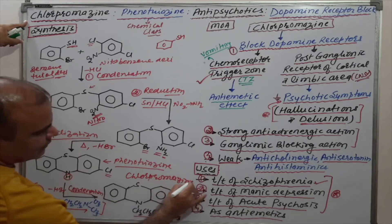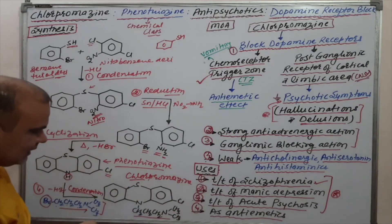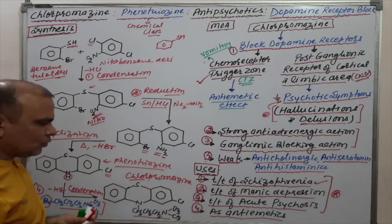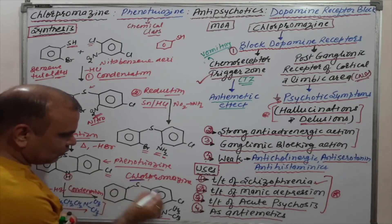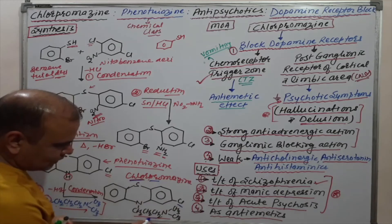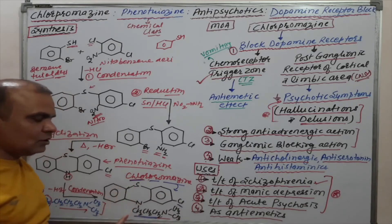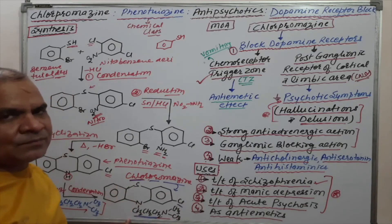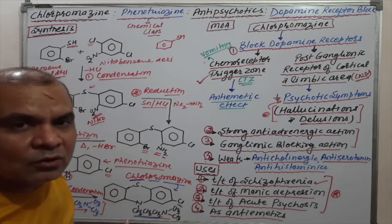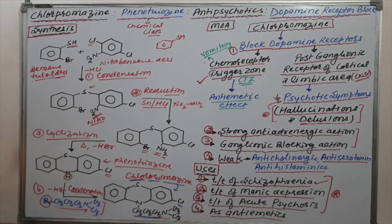You can correlate the structure from the name: 'chloro' means the chlorine group is there; 'pro' means there are three carbons; 'mazine' means there is a phenothiazine ring. In this fashion you can easily remember the structure of Chlorpromazine.